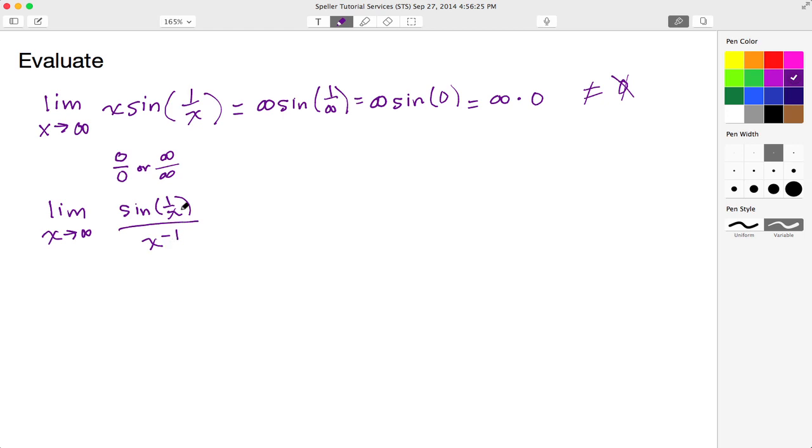Now at this point we're going to do another direct substitution to see if we get one of these indeterminate forms. So sine of 1 over x as x approaches infinity - we just proved up here that that approaches 0.